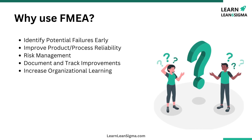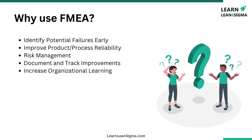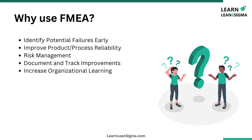Now you understand what FMEA is — why should you use it? Using FMEA offers several key benefits. First, identify potential failures early: by proactively identifying potential failure modes, we can address issues before they result in costly or dangerous problems. Second, improved product and process reliability: FMEA helps enhance reliability by addressing potential failures at the design or process development stage. Third, risk management: FMEA provides a structured approach to assessing and managing risks, ensuring that the most critical issues are prioritized.